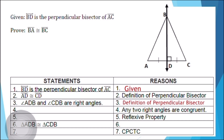For our fourth statement, if the reason is any two right angles are congruent, the answer is angle ADB is congruent to angle CDB. For our fifth statement, if the reason is the reflexive property, the answer is line segment DB is congruent to line segment DB. For our sixth statement, triangle ADB is congruent to triangle CDB, and the reason is the SAS congruence postulate, where A stands for the included angle.